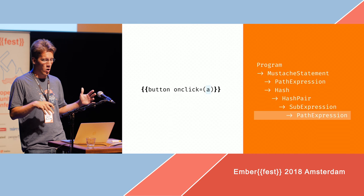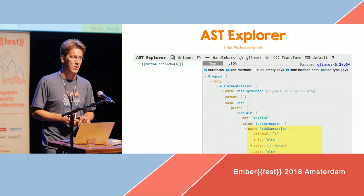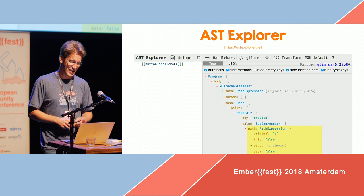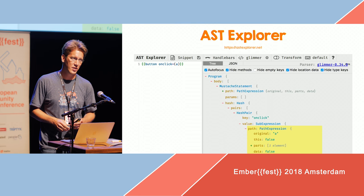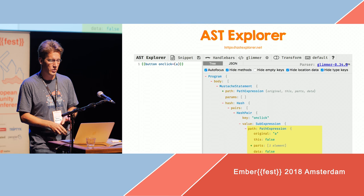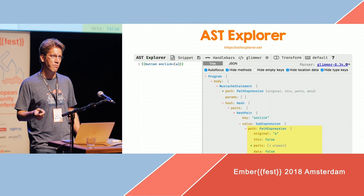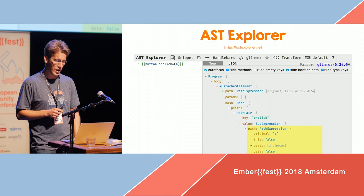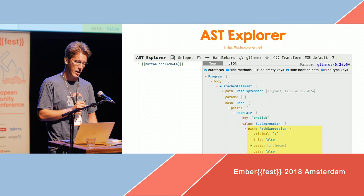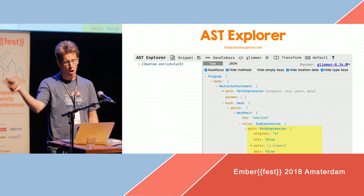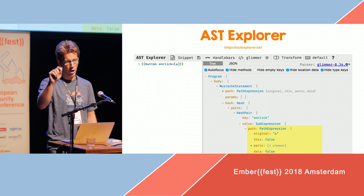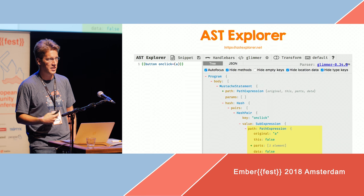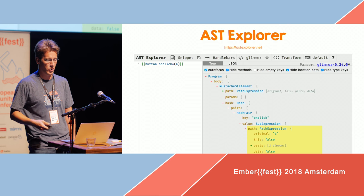You might be wondering how I know all of this. There is this cool web app called AST Explorer. A few months ago I took some time and built Glimmer and Handlebar support into the AST Explorer, so it uses the same @glimmer/syntax parser. You can paste in a template on the left side and it automatically shows you the whole AST on the right side. You can move your cursor around and it highlights the right nodes — it's really awesome to get an idea of how the parser thinks about your code.